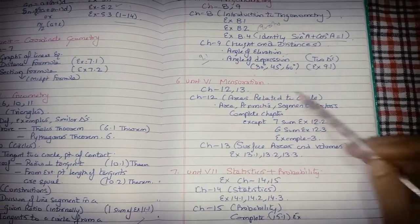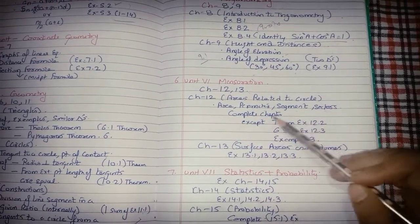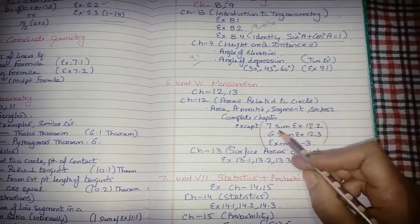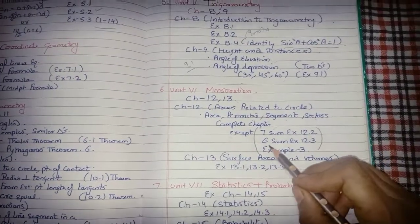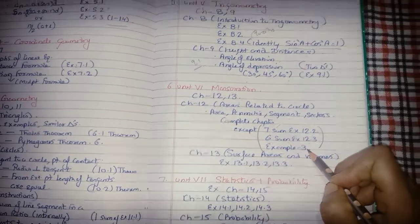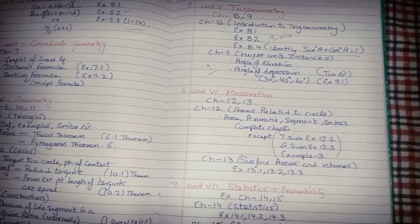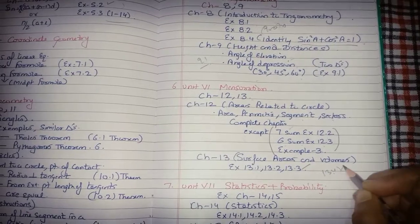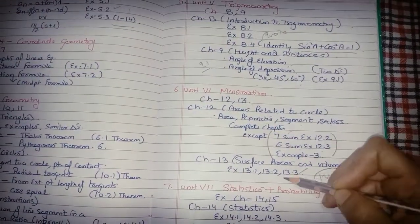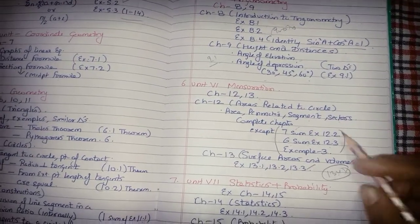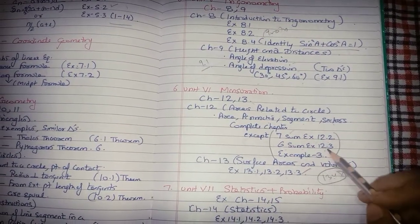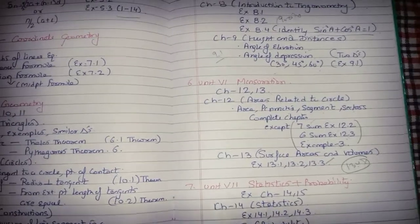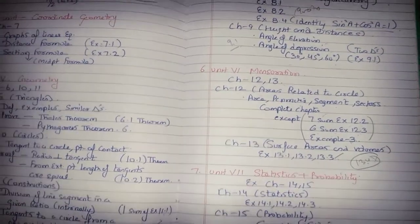Unit 6 is Mensuration, covering chapters 12 and 13. From Chapter 12, Areas Related to Circles: prepare area, perimeters, segments, and sectors - almost the complete chapter. Skip only three questions: question 7 of exercise 12.2, question 6 of exercise 12.3, and example 3. For Chapter 13, prepare exercises 13.1, 13.2, and 13.3 completely; exercise 13.4 is not required.